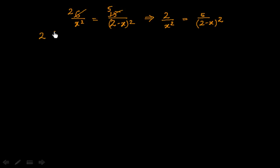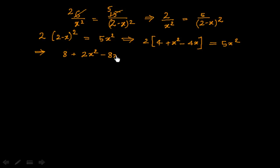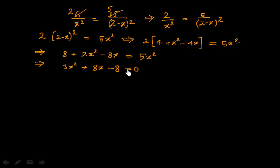Solving this equation by cross-multiplying and expanding: 6 times (2 minus x) squared equals 15 times x squared. Expanding using a squared plus b squared minus 2ab, we get 6 times (4 plus x squared minus 4x) equals 15 x squared, which gives 24 plus 6x squared minus 24x equals 15 x squared. Rearranging: 3x squared plus 8x minus 8 equals zero.